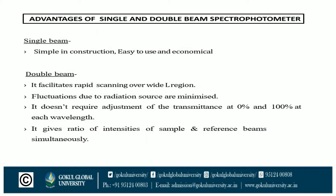The double beam facilitates rapid scanning over a wide wavelength region. Fluctuations due to the radiation source are minimized. It does not require adjustment of the transmittance at 0% and 100% at each wavelength, and it gives the ratio of intensities of the sample and reference beams simultaneously.